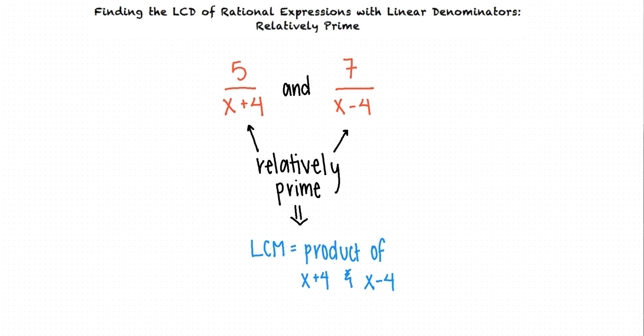Okay, so to determine their product, we would multiply x plus 4 and x minus 4, right? Right. This tells us that the least common denominator of the two expressions is the quantity x plus 4 times the quantity x minus 4.